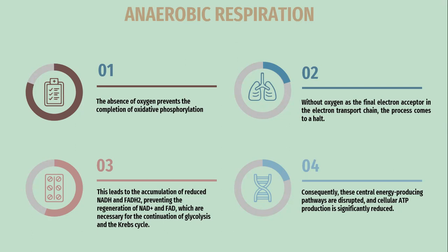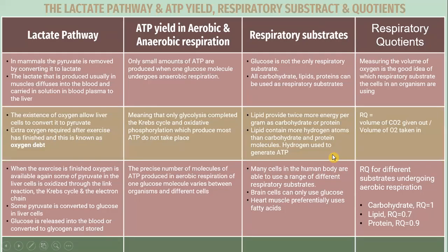In the lactate pathway, in mammals, pyruvate is removed by converting it to lactate. The lactate produced, usually in muscles, diffuses into the blood and is carried in solution in blood plasma to the liver. The presence of oxygen allows liver cells to convert it back to pyruvate. Extra oxygen is required after exercise has finished, and this is known as oxygen debt.